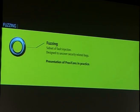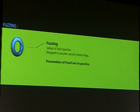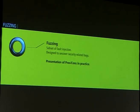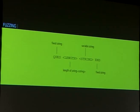So what is fuzzing? Fuzzing is, at least for me, a subset of fault injection, because it was designed and invented to uncover security-related bugs. Fuzzing comes from the name of the first fuzzer called Fuzz, which was simply a software that creates random strings and sends them to other programs.